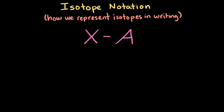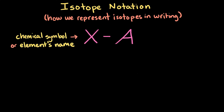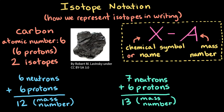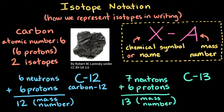Another notation used for isotopes is the chemical symbol or the element's name, symbolized by X, followed by a hyphen and the mass number, symbolized by A — so X hyphen A. Returning to our carbon isotopes example: for the carbon isotope with 6 protons and 6 neutrons, we write that as C-12 or carbon-12. For the carbon isotope with 6 protons and 7 neutrons, we write that as C-13 or carbon-13.